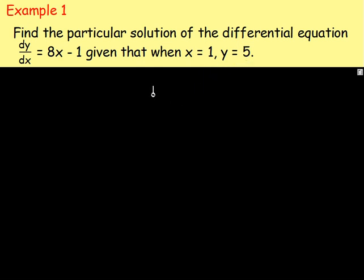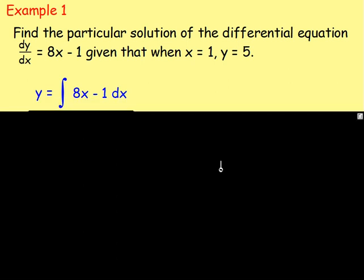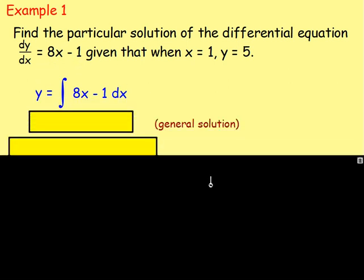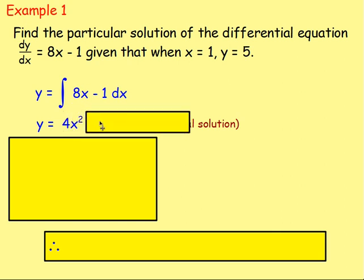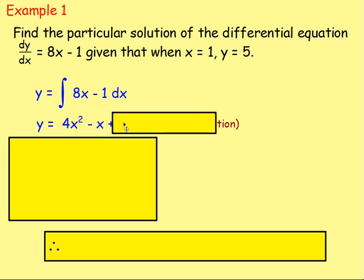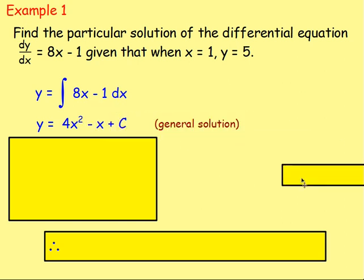So if you want to solve that, you want to get back to y — you integrate. So you want to integrate 8x minus 1. Integrating that, you will have y equals — add 1 to the power, so it becomes x squared over 2, which gives you 4x squared. Integrate 1, you will have minus 1x. And remember at the end, whenever you integrate, you will have plus c.